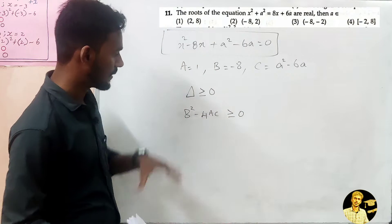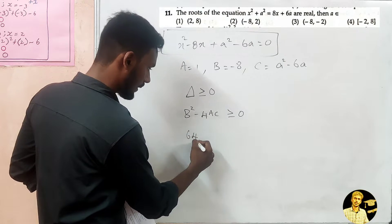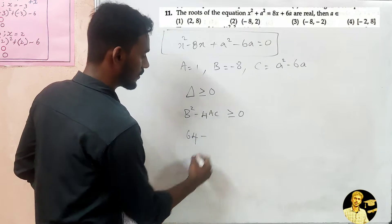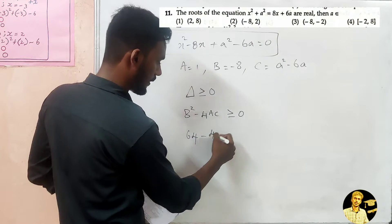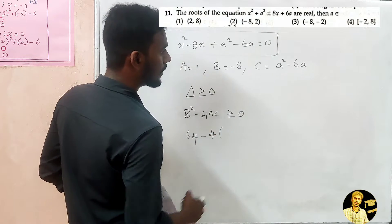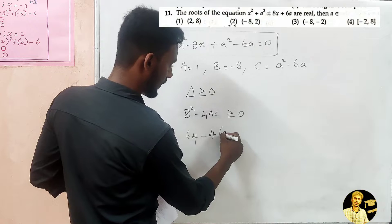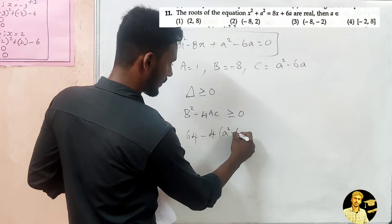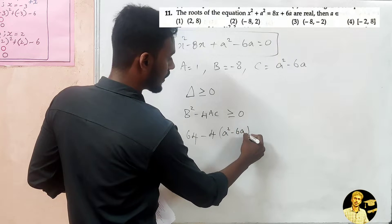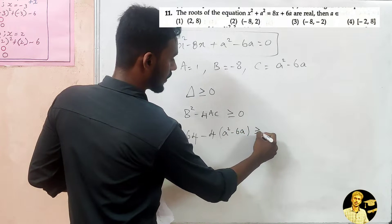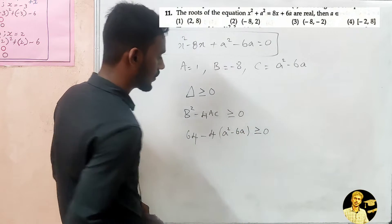Substituting the values: it is 64 minus 4 into (a² - 6a) is greater than or equal to 0.